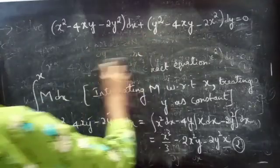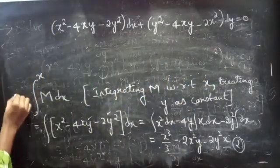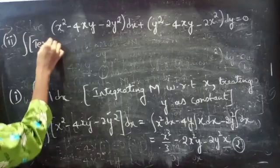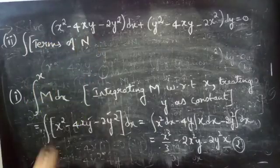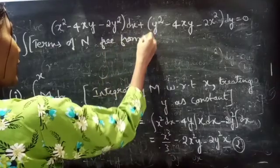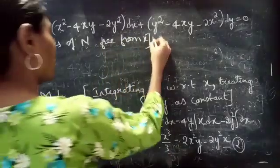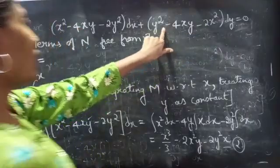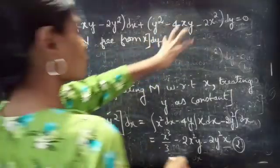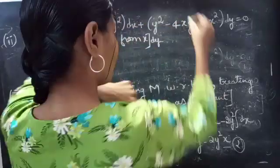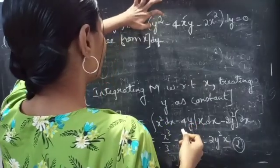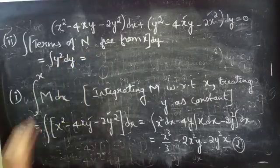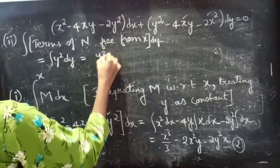For the second part, we integrate the terms of N which are free from x. Considering N equals y squared minus 4xy minus 2x squared, we take only the term free from x, which is y squared. The integral of y squared dy equals y cubed by 3. Consider this as equation 3.